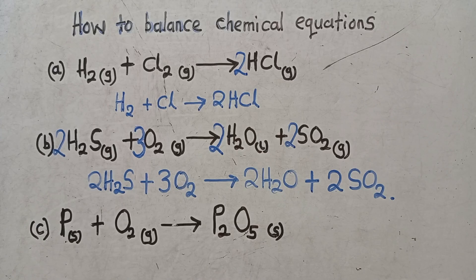We move to the last one. How can you balance this chemical equation that is here? This is phosphorus plus oxygen gas giving us diphosphorus pentoxide. So how then do we balance this?